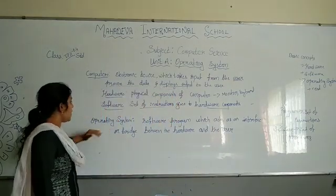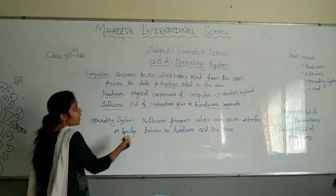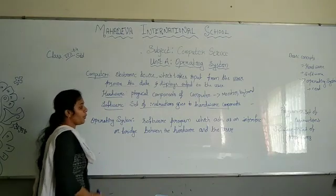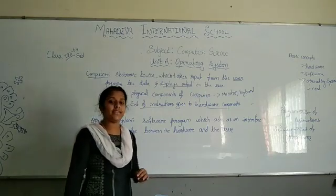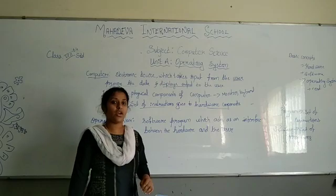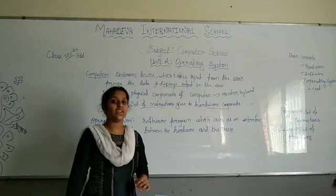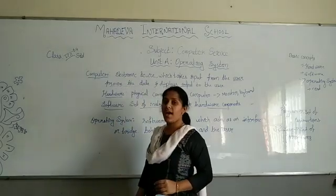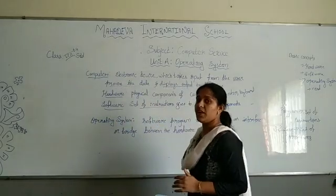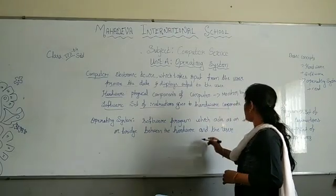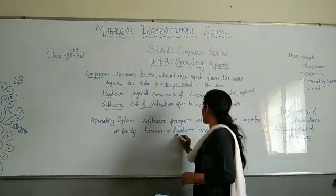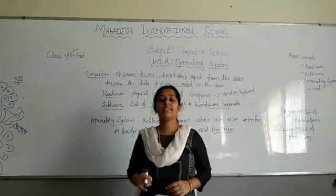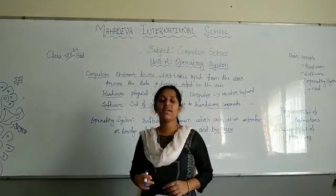Now let us see what is an operating system. What do you mean by operating system? Operating system is a software — and software is a set of programs. Operating system is a software that serves as an interface between the user and the hardware components — it acts as a bridge between the user and the hardware.